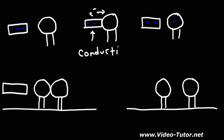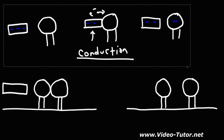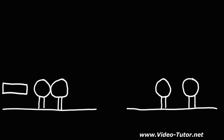In order to charge an object by conduction, the two objects must be in contact. If the two metal objects don't make contact, then you can't charge by conduction. When charging by induction, no contact is involved — particularly with a charged object. The metal rod is not going to touch the metal spheres.